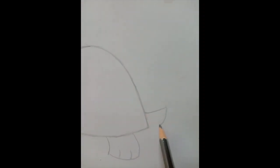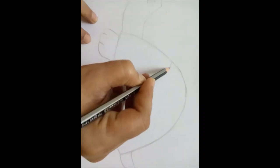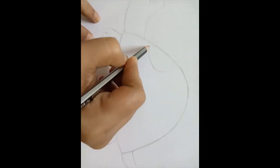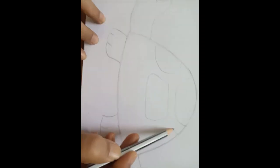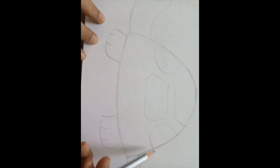And a tiny tail. Now we will add the details. Make these random shapes wherever you want.